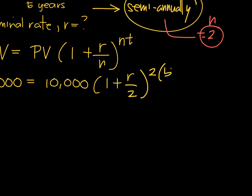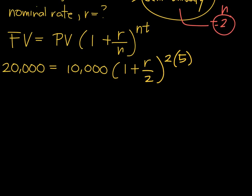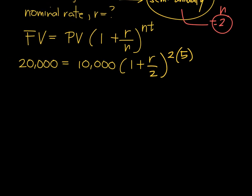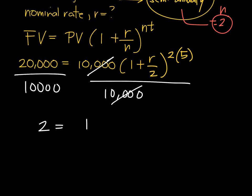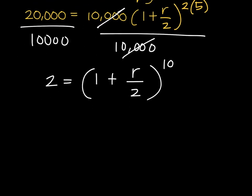The first thing you need to do is divide both sides by the PV to eliminate the 10,000. Twenty thousand over ten thousand is 2, so your equation is reduced to 2 equals 1 plus R over 2 raised to 10.